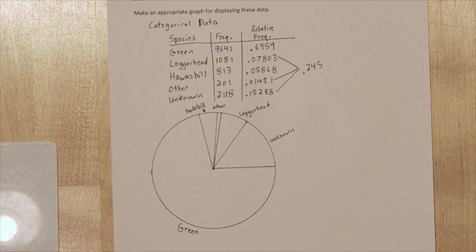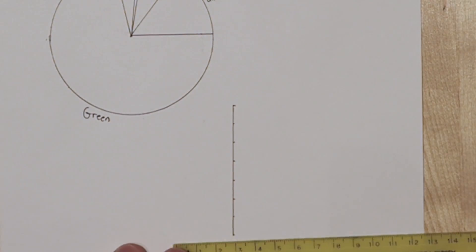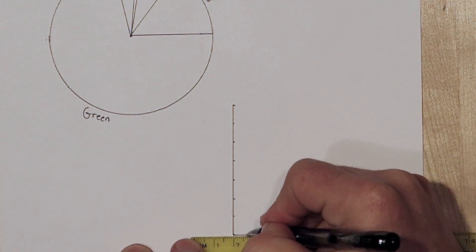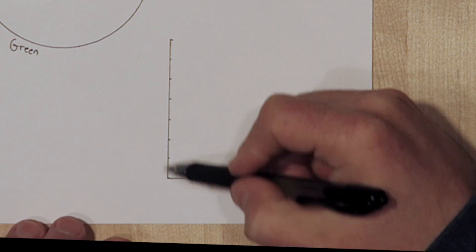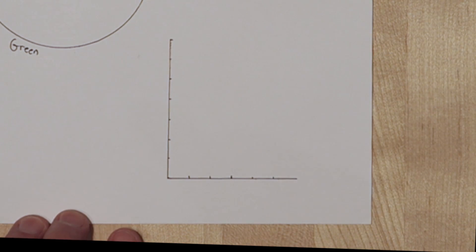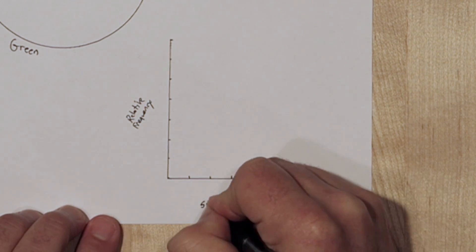So that's one way to display the data. Another way to display the data is with a bar chart. Since our highest relative frequency is close to 70%, let's make sure our y-axis goes all the way to 70%. So our vertical axis is going to be the relative frequency, and our horizontal axis will be for the different species.